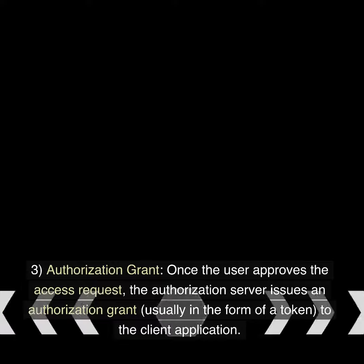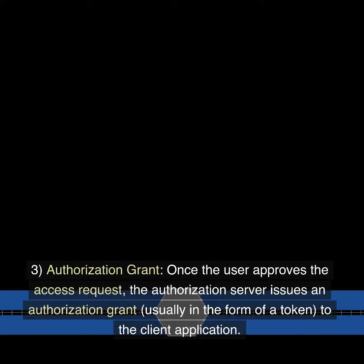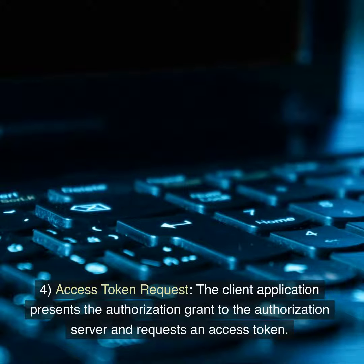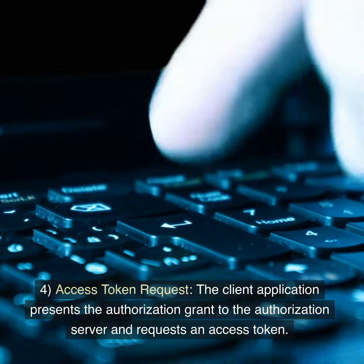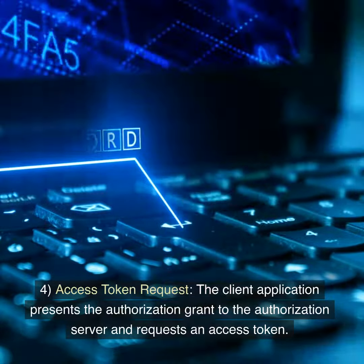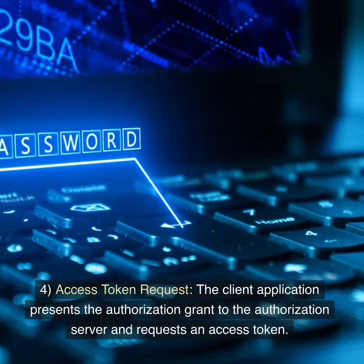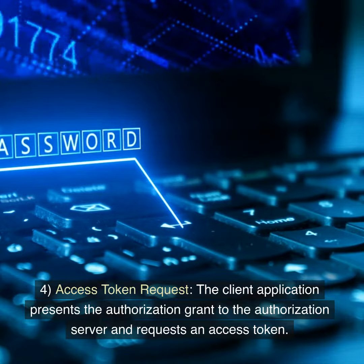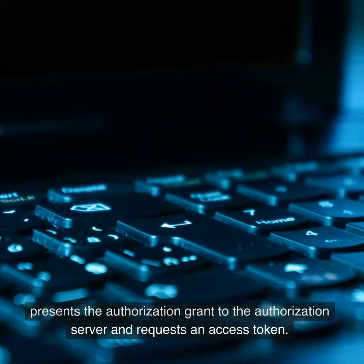Step 3: Authorization grant. Once the user approves the access request, the authorization server issues an authorization grant, usually in the form of a token, to the client application. Step 4: Access token request. The client application presents the authorization grant to the authorization server and requests an access token.